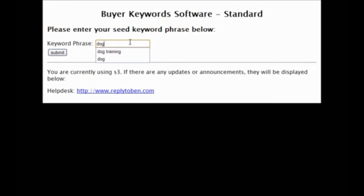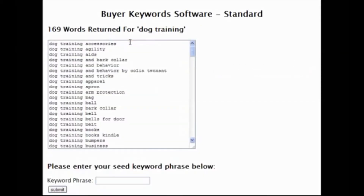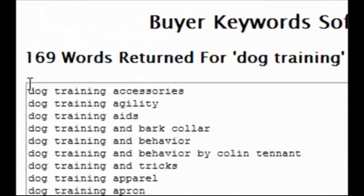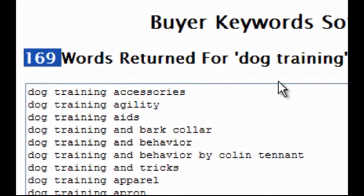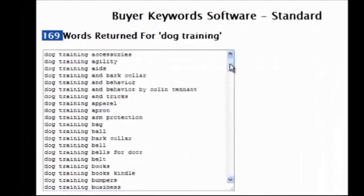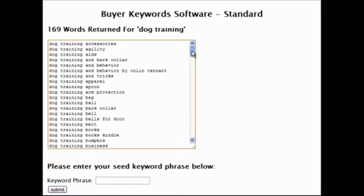Let me show you an example. This is Buyer Keyword Software. We'll put in 'dog training,' click submit, and within a few seconds it returns all of those results which you would have had to do manually. There are 169 keywords for 'dog training,' and the great thing is you know these are keywords which people are actively searching for on Amazon — and therefore actively using to buy.